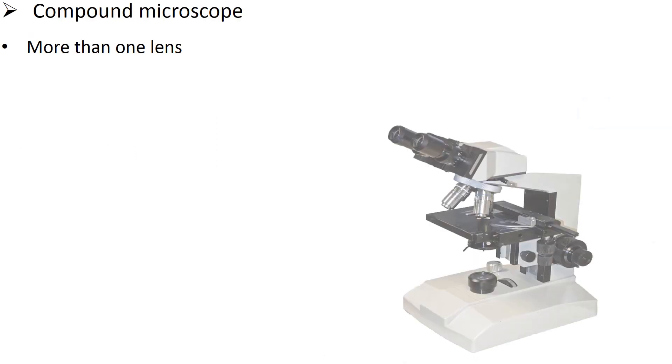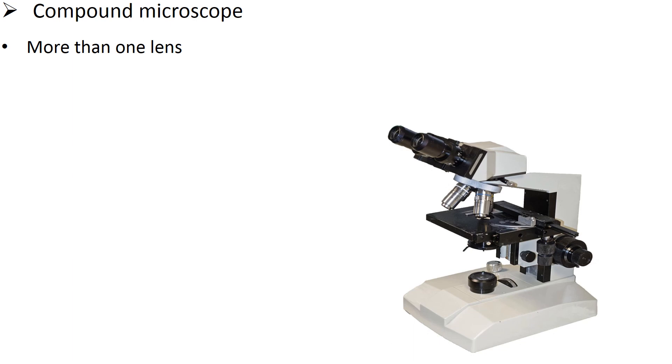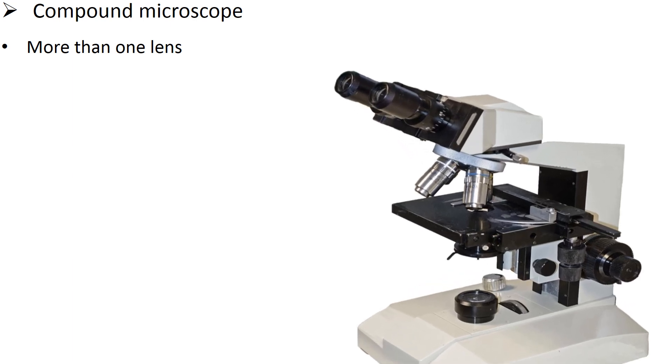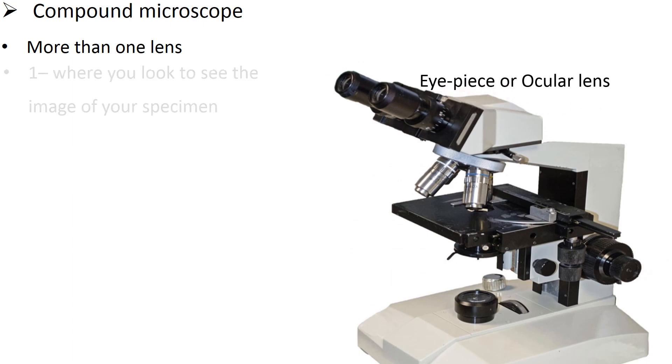Compound microscope: If a microscope has more than one lens, then it is called a compound microscope. Usually, a compound microscope has three lenses, namely eyepiece or ocular lens, where you look to see the image of your specimen.